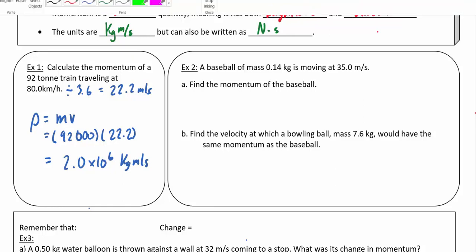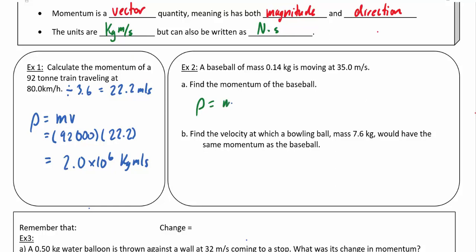Something with a little bit less momentum would be, say, a baseball. Imagine a baseball with a mass of 0.14 kg throwing it at about 100 km/h, so 35 m/s. ρ = mv, and 0.14 kg times 35 m/s is going to give me approximately 4.9 kg⋅m/s of momentum.